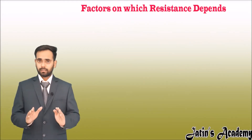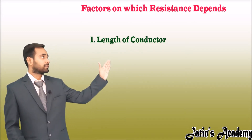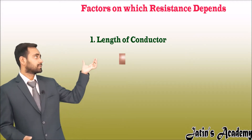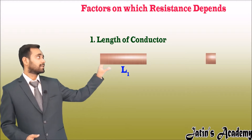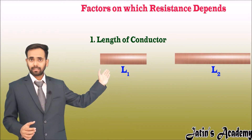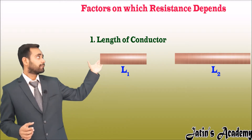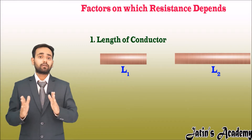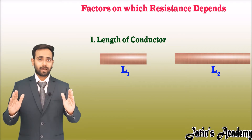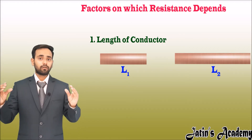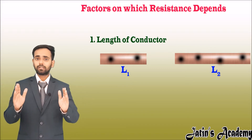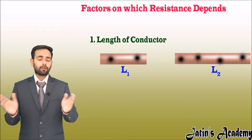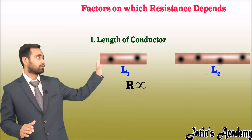Let us understand the factors on which the resistance of a material depends. The first factor is length. We have two wires: a small length wire L1 and a larger length wire L2, where L2 is greater than L1. Which one has larger resistance? Yes, L2 has larger resistance, because it has more material, meaning there are a larger number of inhomogeneous particles. Therefore, larger length means larger resistance. From this we conclude that R is directly proportional to L.